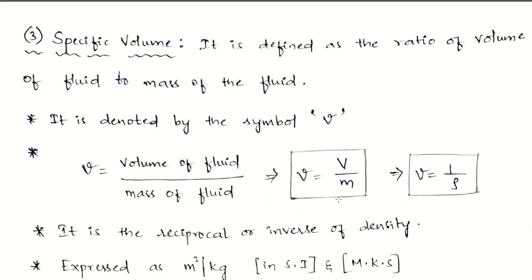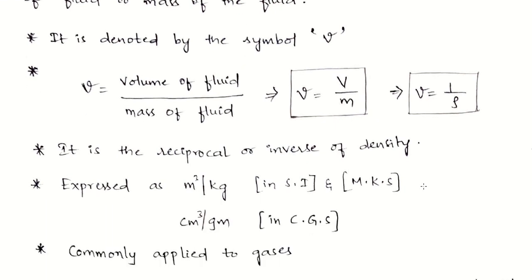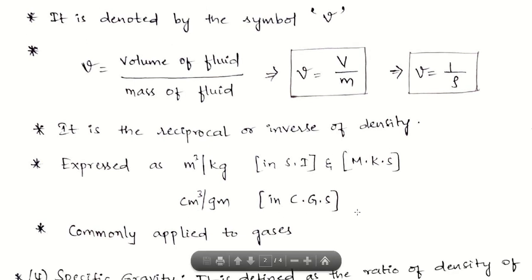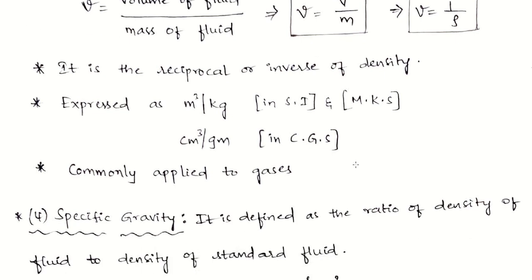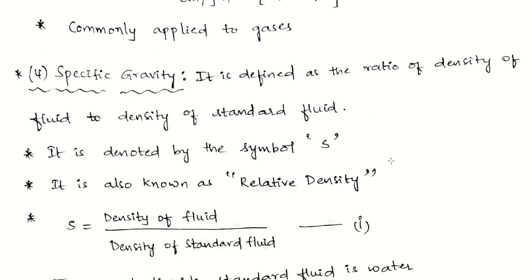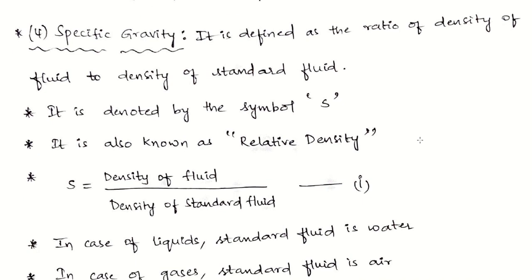The third property is specific volume, which is simply the reciprocal of density. Since density is mass by volume, specific volume is volume by mass. It is denoted by the symbol small v, so v = V/m = 1/rho. Units are m³/kg in SI/MKS and cm³/g in CGS. Specific volume is a property related to gases — we do not use it for liquids.